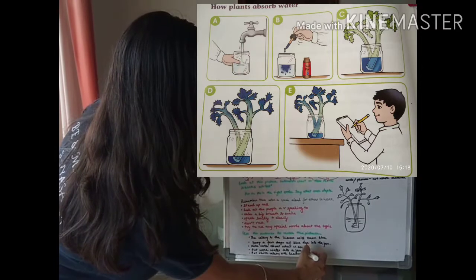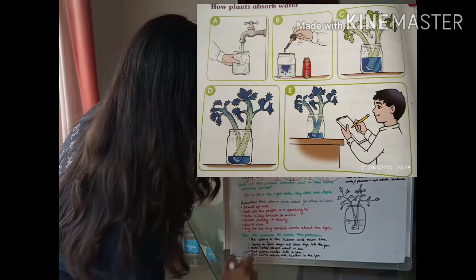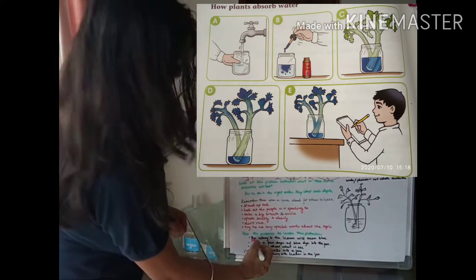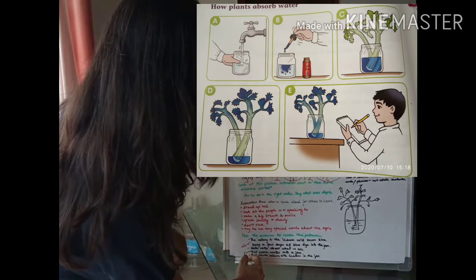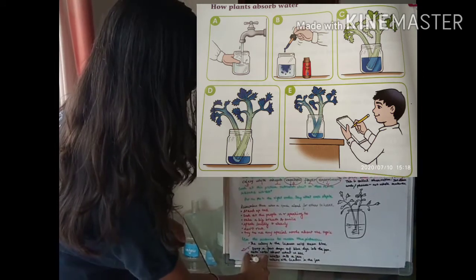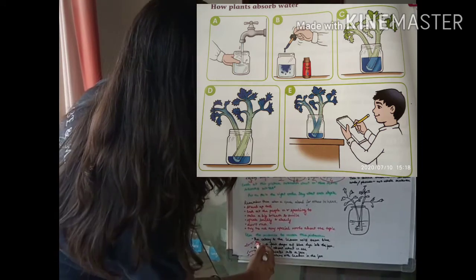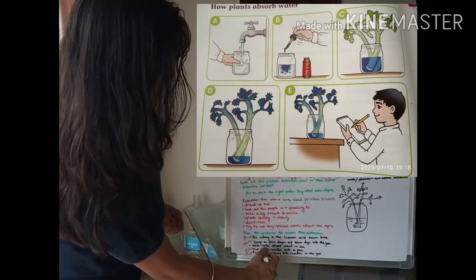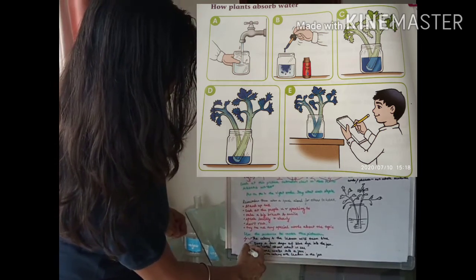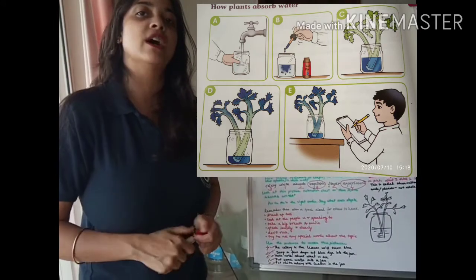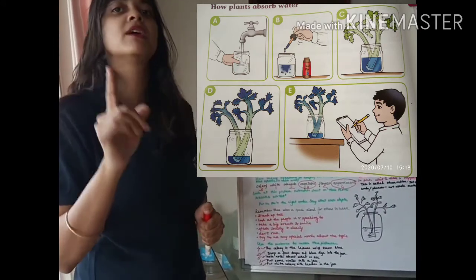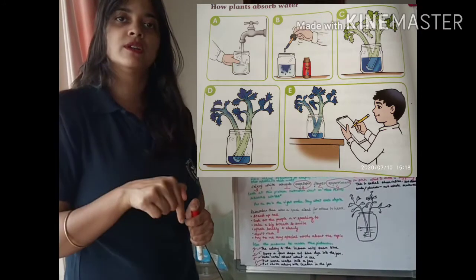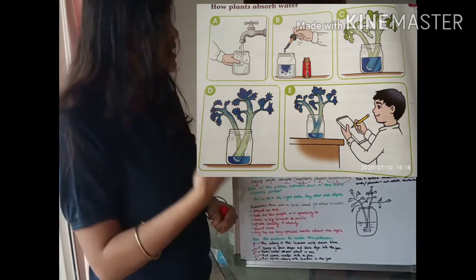Let me put these instructions in order. Number one: put some water into a jar. Number two: drop a few drops of blue dye into the jar. Number three: put white celery with leaves in the jar. Number four: the celery and the leaves will turn blue. Number five: make notes about what you see. So basically, you put some water in a jar, then put some food color — preferably blue, it will give you good results.